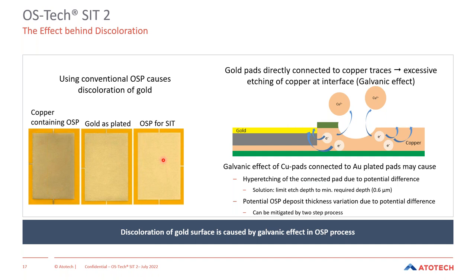An additional risk: if copper pads and ENIG pads are on the same panel — and may even be connected — you may have different potentials on the copper pads versus the ENIG pads, and different potentials between copper pads connected to ENIG and those that are isolated. This can lead to excessive corrosion or differential etching of the copper, where connected pads are etched more than isolated ones. The two-step SIT process is designed to prevent exactly this differential attack on connected versus isolated copper pads.